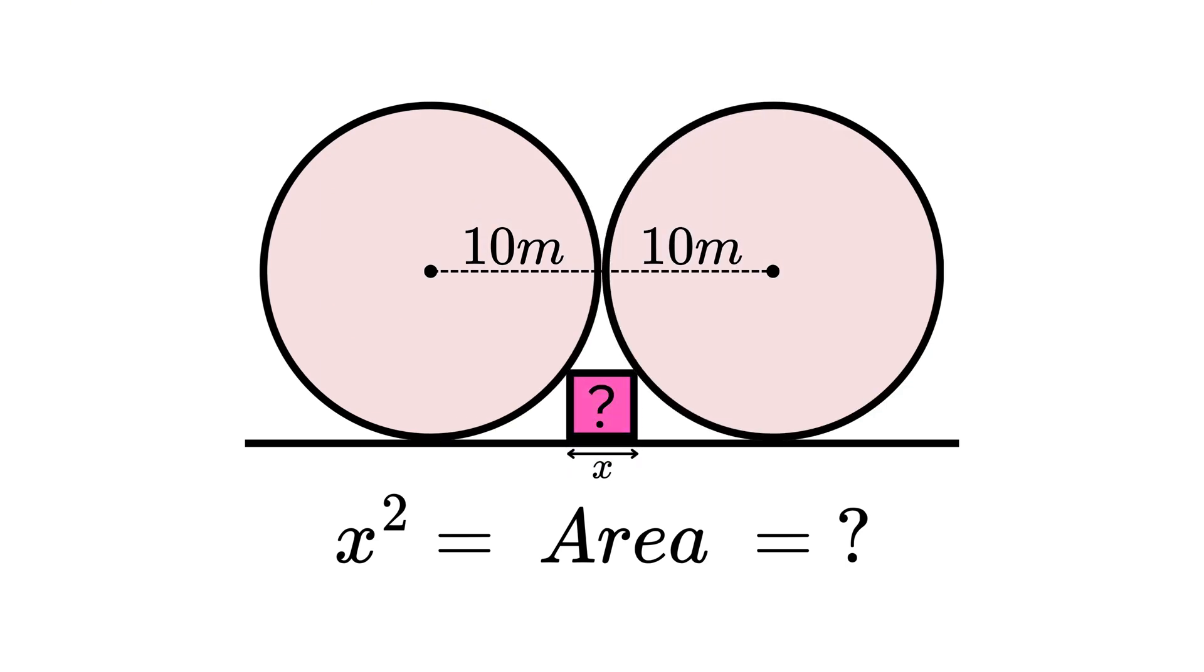We have two circles and one square and we need to work out the area of the square using the radius of the circles. If you want to try this on your own, pause the video because we're about to begin.